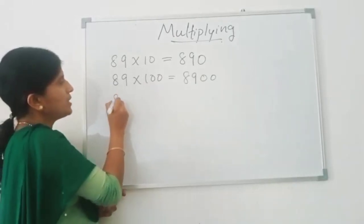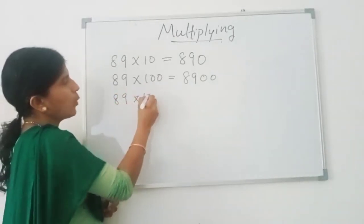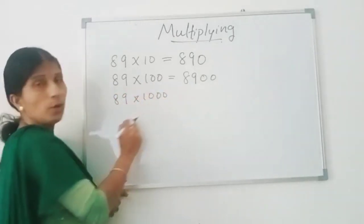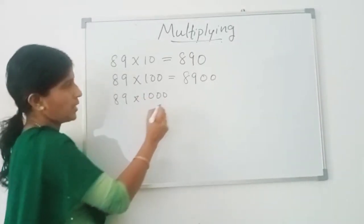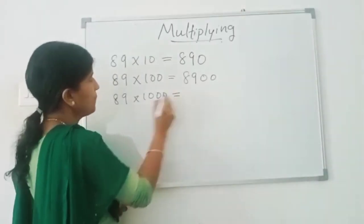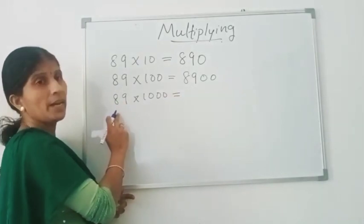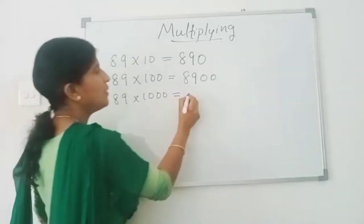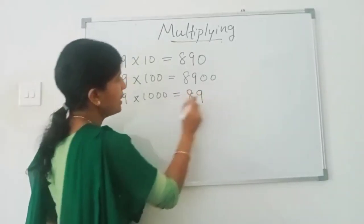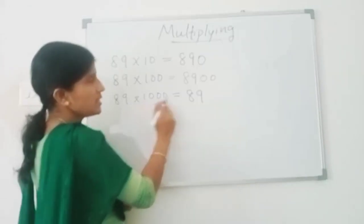Then, what about 89 times 1000? Okay, there are three zeros in 1000. So, for multiplying 89 by 1000, we can just write 89 and add these three zeros.